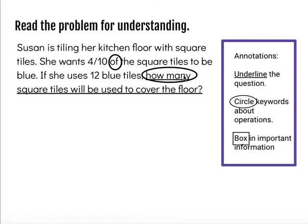And then we're going to box in important information. So I need to cover the whole floor, so I'm considering the whole floor not what tiles are not blue, for example. I know that four tenths of the square tiles are blue and that twelve of the tiles are blue. And those are going to be critical for solving.